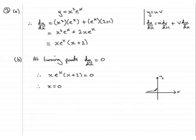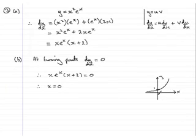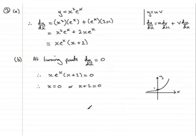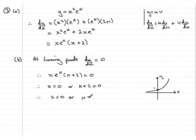Now, think about the graph of e to the x — it comes up through 1 and goes off like that. e to the x never equals 0; it might tend to 0 as x tends to negative infinity, but it never actually equals 0. So we discard that factor. From x plus 2 equals 0, we get x equals minus 2. So we have x equals 0 or x equals minus 2 as the x-coordinates of the turning points.